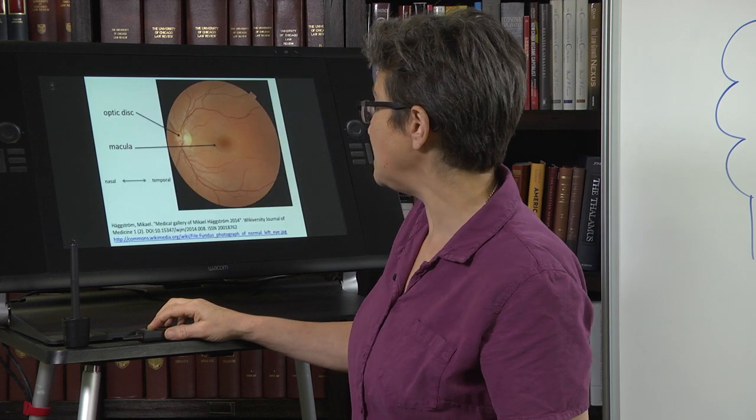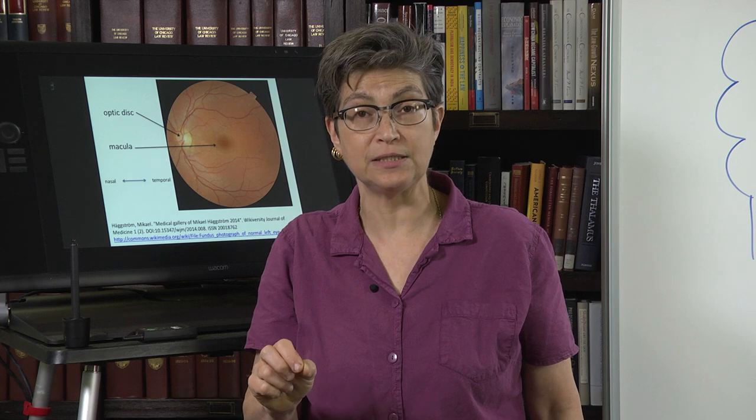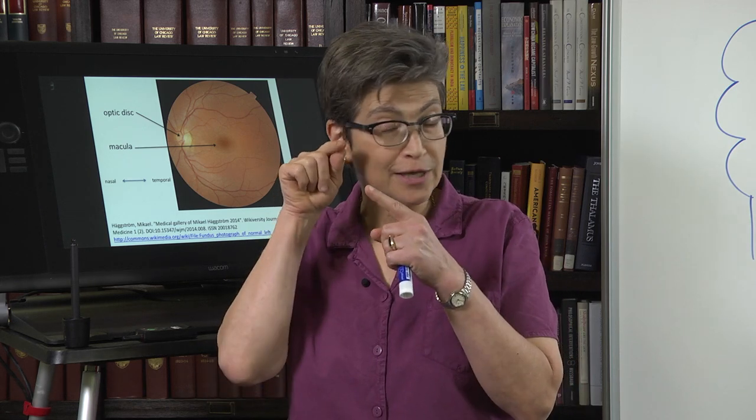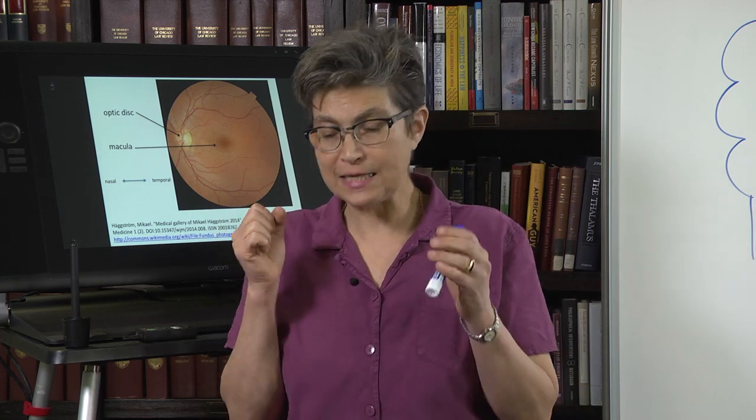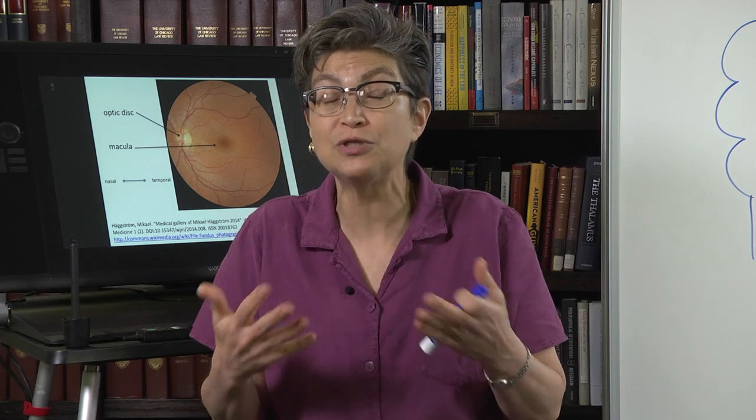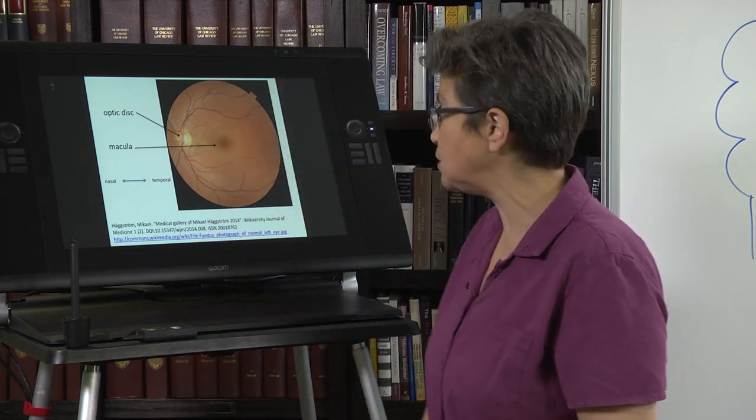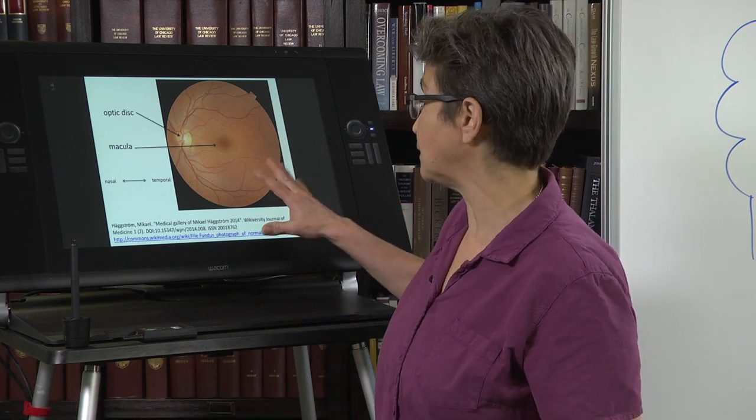What that means is when you gaze into somebody's eyes with an ophthalmoscope, which allows you to get through the pupil and visualize the retina, you are looking at the central nervous system. That is extremely powerful. The retina is the window to the central nervous system, the window to the brain. It's the most accessible way with no invasive procedure to look at the brain.